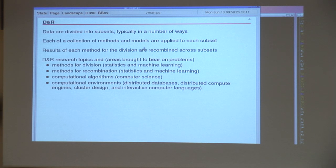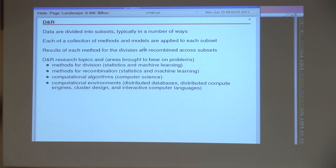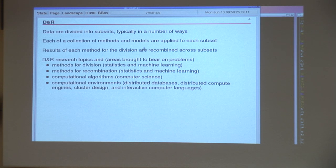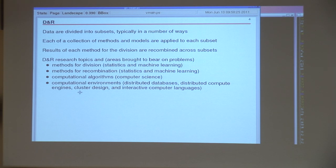Since most of you are in computer science, you're probably thinking: isn't that just MapReduce? Well, it's well beyond MapReduce. We use the MapReduce computational framework, but at the level of dividing and recombining we're at the level of statistics and machine learning. DNR research topics include methods for division, methods for recombination — that's statistics and machine learning — computational algorithms, computer science, and computational environment, meaning distributed databases, distributed compute engines, cluster designs, and interactive computer languages.